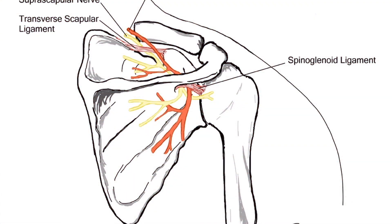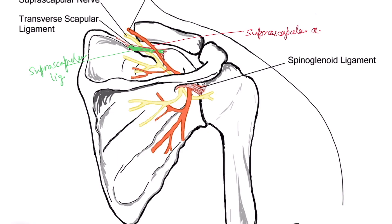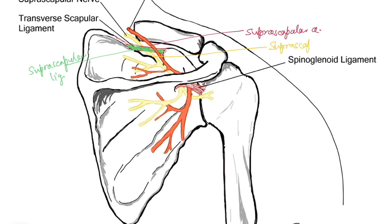In this image you are seeing the dorsal aspect of the scapula. There is a ligament bridging the suprascapular notch — this is the suprascapular ligament. There are suprascapular nerves and vessels here. The suprascapular artery runs above the ligament — 'A' for artery, 'A' for above. The suprascapular nerve passes below the suprascapular ligament — 'N' for nerve, 'N' for niche, meaning below.